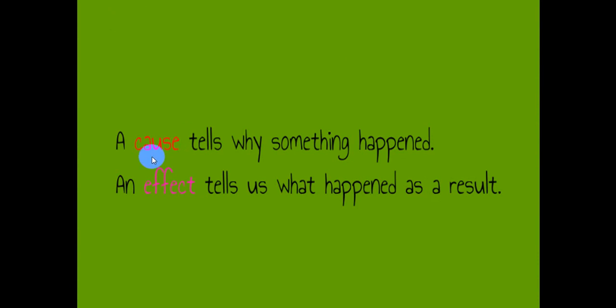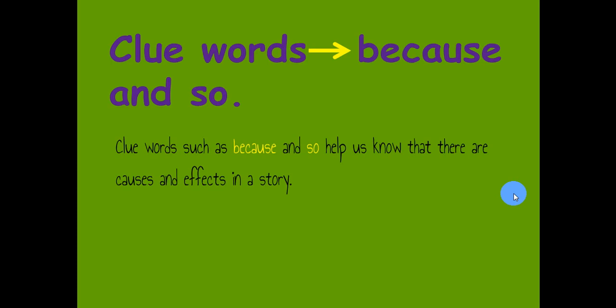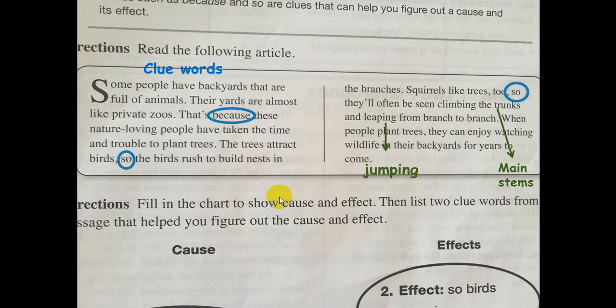A cause tells us why something happened — it's the reason. An effect tells us what happened as a result. The clue words are 'because' and 'so'. Clue words such as 'because' and 'so' help us know that there are causes and effects in a story. This is page two hundred twenty-one.